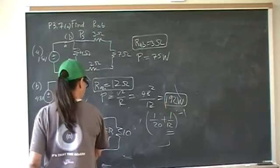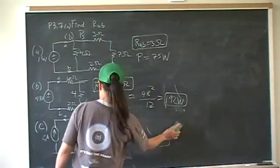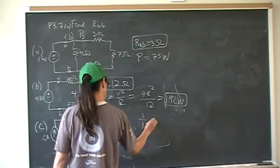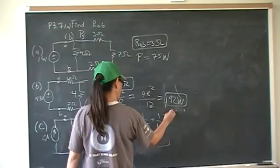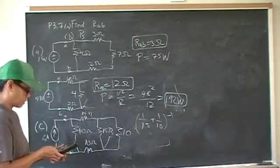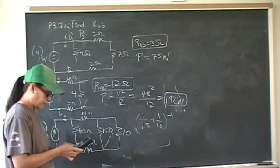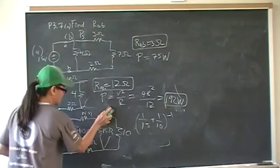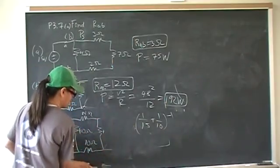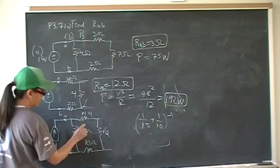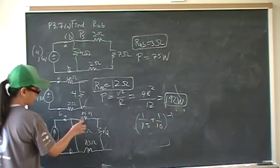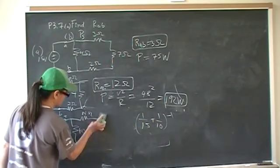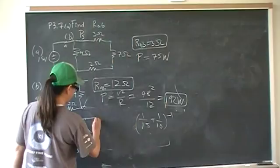So 10 in parallel with 15, we have 10 in parallel with 15, it's going to give us 6. So now these are in series, 14, 6, and 10. That's 20, that's 30. So then we have 60 in parallel with 30.